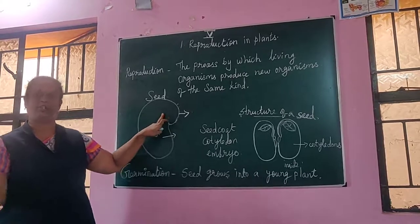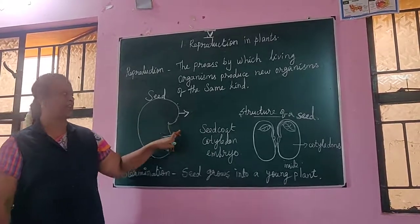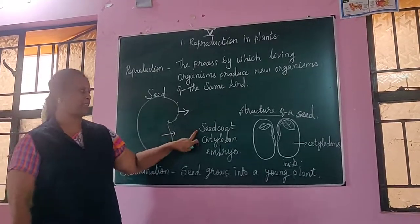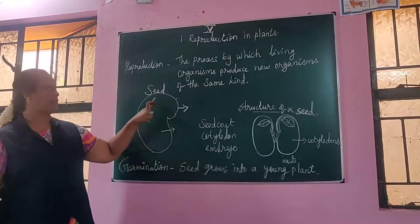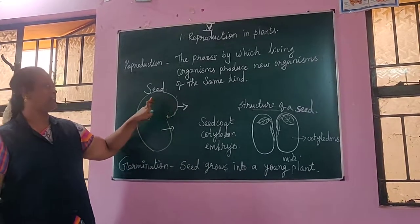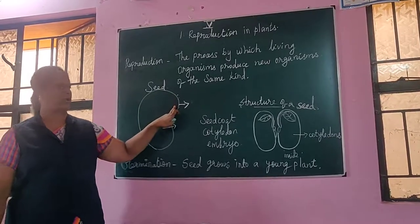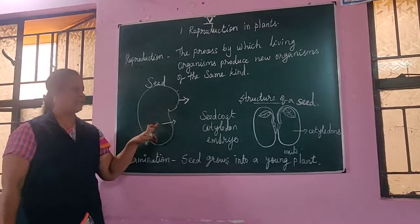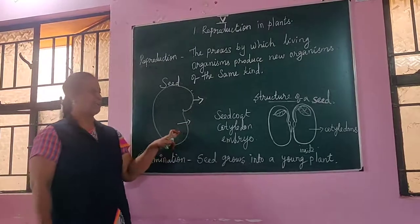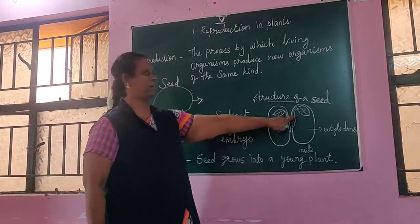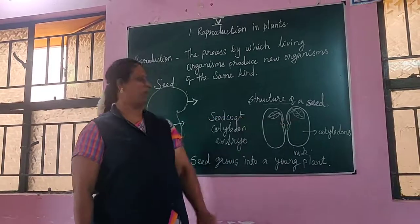This one is a seed. A seed has three parts: seed coat, cotyledon, and embryo. Seed coat means the outer covering of the seed. Inside one part of the seed is the cotyledon. The new plant produced inside the seed is called the embryo.